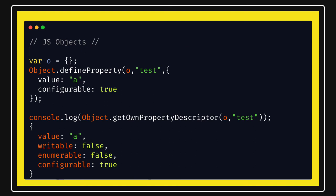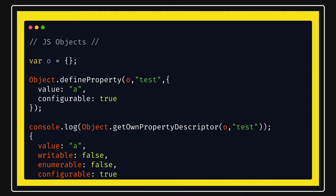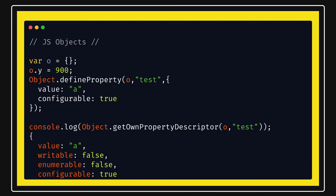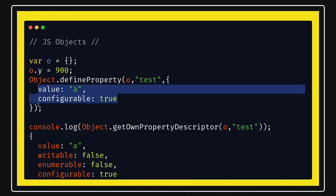Now if you already have an object, how to create new properties — simply what we do is if object o is there, then we can say o.y = 900. These are simple ways we can append properties to the object. There is one more method to add new properties which is native to JavaScript: Object.defineProperty. What Object.defineProperty does is it is used to create a new property on the existing object. Here o is the existing object, I am adding a test property, and I am providing the descriptor information about the property.